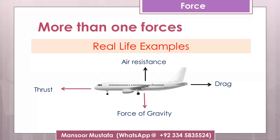When the aeroplane moves in the forward direction, in addition to those three forces, there is another force which is being generated - that force is called drag force. The drag force is the force that acts when any object moves in a fluid. Remember, fluid means liquids or gases. When any object moves in a liquid or gas, that fluid resists the motion of the object by applying a backward force. That backward force against the object's motion is called drag force. So when this aeroplane is flying, there are four forces acting on it.